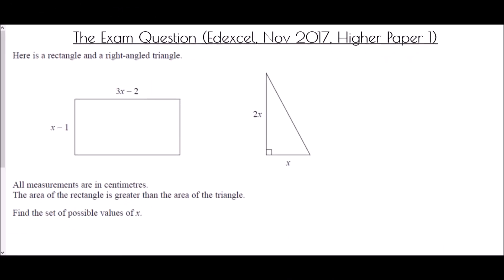Now we end with an exam question from the Edexcel paper in November 2017, Higher Paper 1. It says: here is a rectangle and a right-angled triangle; all measurements are in centimetres. The area of the rectangle is greater than the area of the triangle — find the set of possible values of x. The first thing we need to do is work out the area of each shape.